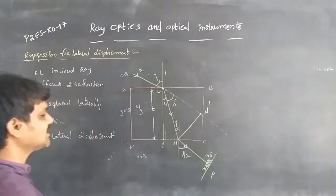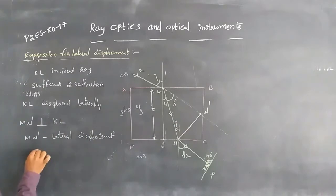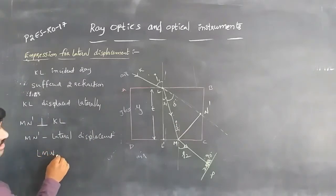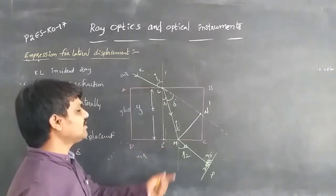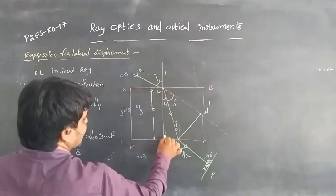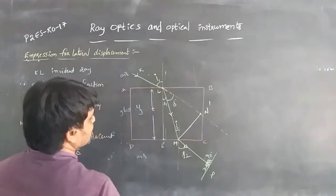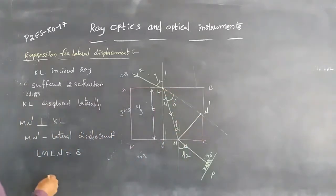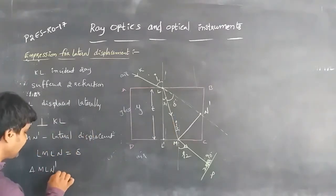To find the lateral displacement, we consider that angle MLN dash equals delta. We use two triangles: triangle LLdash M and triangle LMN dash. From triangle MLN dash, we can derive the relationship for lateral displacement.